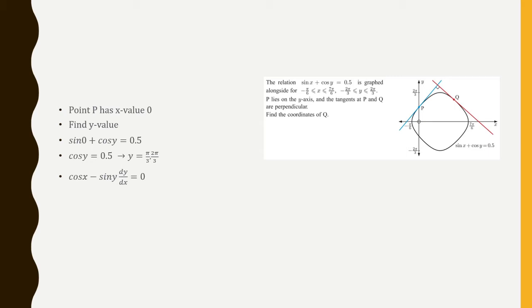The next thing is, I want to find the derivative because now I have the point and I can find the slope by taking the derivative. So for the derivative, we're going to use implicit differentiation. So the derivative of sine of x is cosine of x. The derivative of cosine of y is negative sine of y dy dx. And that's going to equal to zero, since the derivative of one-half is zero.